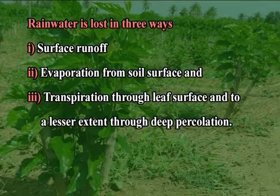Rainwater is lost in three ways: surface runoff, evaporation from the soil surface, and transpiration through the leaf surface, and to a lesser extent through deep percolation. The first two losses have to be arrested and the last one restricted only when severe stress occurs. Runoff losses can be checked by following contour bunding, graded bunding, or vegetative barriers. Runoff from interbunded areas can be further checked by contour cultivation and formation of dead furrows, which are flow furrows made between crop rows at an interval of 2 to 4 metres depending upon the crop.